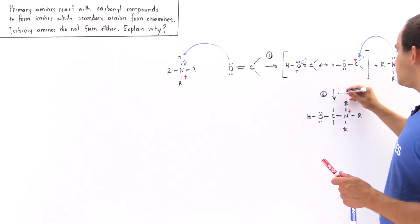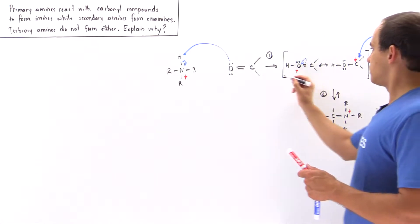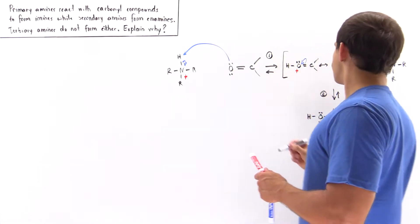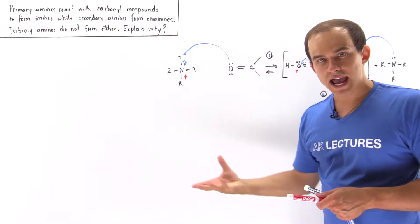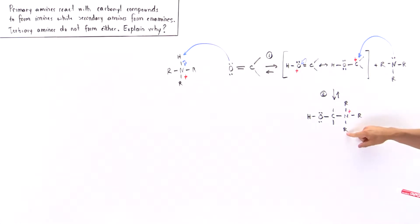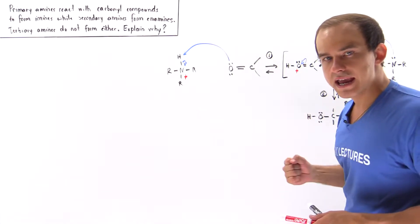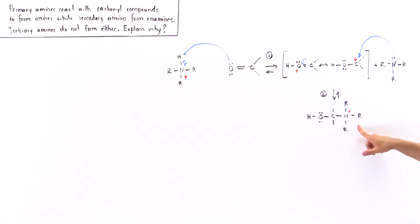Now, by the way, these reactions are reversible, so we can also go in reverse. Now what could be the next potential step? For the primary or the secondary amine, we had an H group attached to our nitrogen, and so as long as we had the H group, we could deprotonate this nitrogen by removing that H group, forming a more stable intermediate.